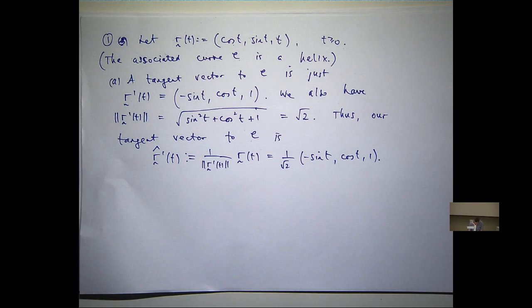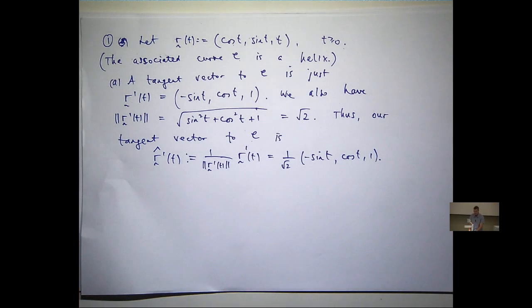On the difficulty scale, pretty low. I expect you to know how to find a tangent vector and how to normalize it. That's pretty easy stuff. Oh yes, R dash. Thank you. Alright, let's have a look at the second part of the problem.